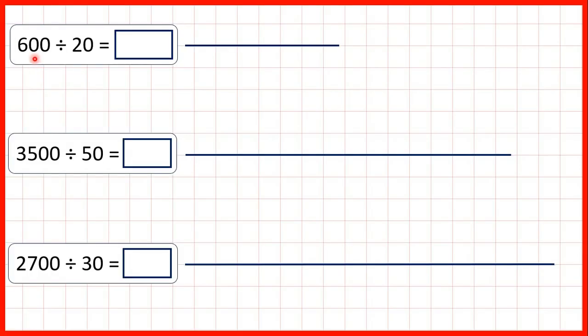For these questions, we start with multiples of a hundred — numbers that end in two zeros — and we're dividing by multiples of 10, so numbers that end in one zero.